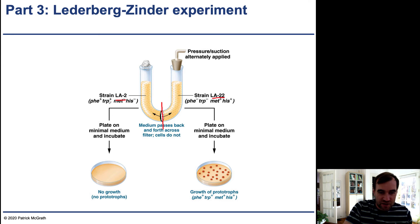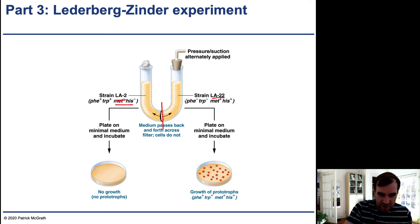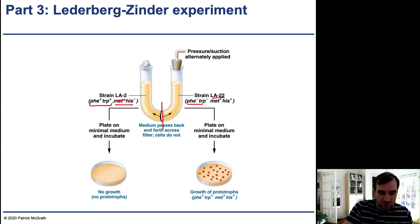Neither of these strains were prototrophs because they each lacked certain genes. One strain was not able to produce methionine or histidine, and the other strain was not able to produce phenylalanine or tryptophan. These were complementary to each other, so if you could somehow get those two genes into one strain, that strain would be able to grow on minimal media.